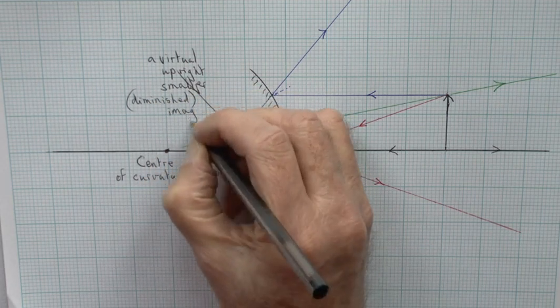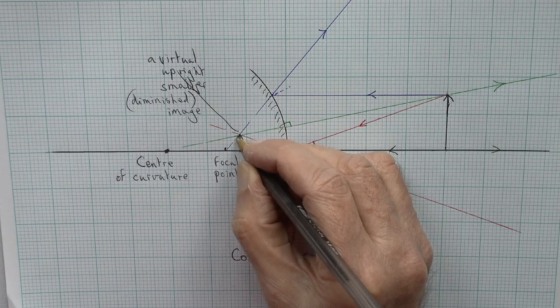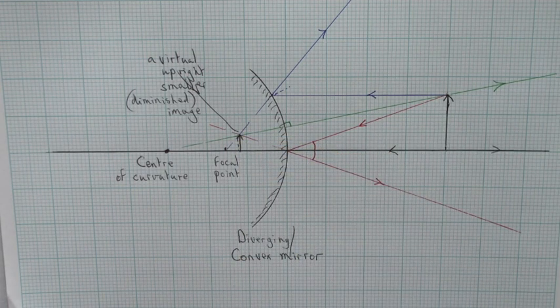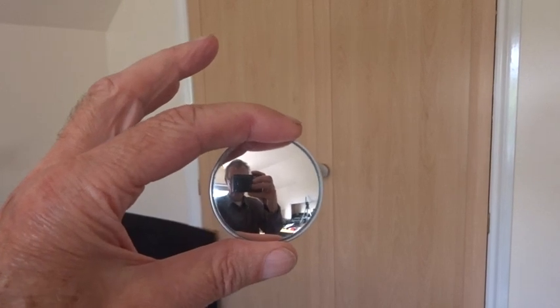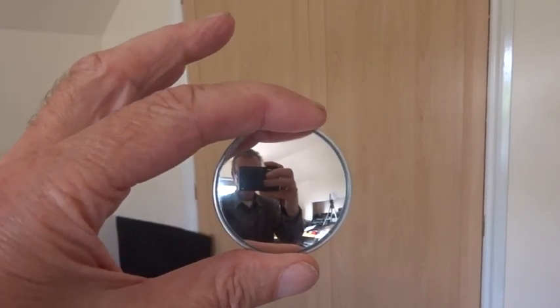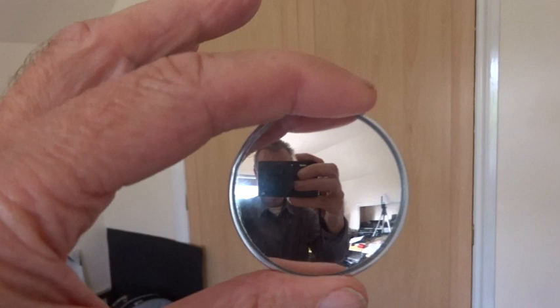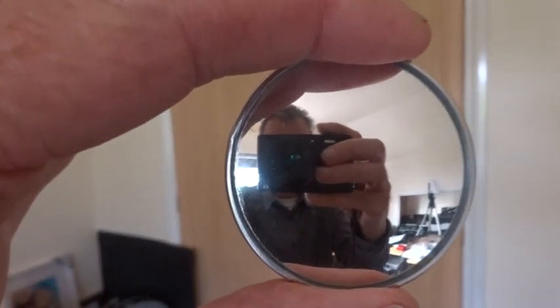And those qualities, you remember, are exactly what we saw when we used the camera to look in the mirror and move it towards us. The image is smaller, it's behind the mirror, it's virtual, and it's the right way up. Thank you for watching.